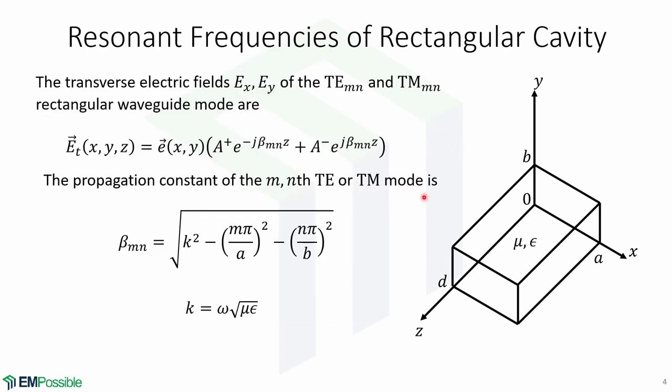Let's now look first at a picture of the rectangular cavity that we will use to derive the resonant frequencies. This device is located at the origin of the XYZ axis. The length along the X axis is A, the length along Y is B, and the length along Z is given by D, and the material filling inside the cavity is given by mu and epsilon.